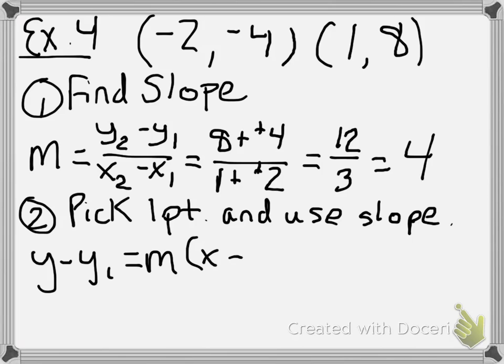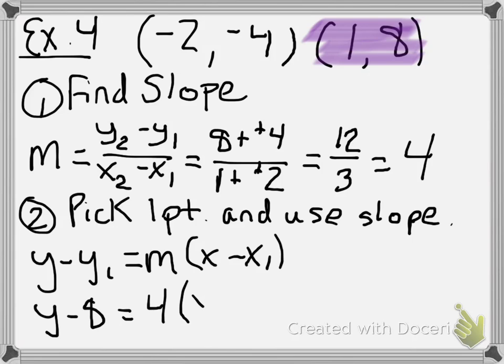There it is again: y minus y₁ equals m quantity x minus x₁. Now like I said, I'm always a very positive guy. I'm very optimistic. I have a point there that says two positive numbers. I'm going to use (1, 8). If you chose to use (-2, -4), all power to you. Your steps would look a little different than mine, but what we're going to do is we're going to put this in slope-intercept form at the end, and both lines should be the same slope-intercept form at the end, regardless of which point you use. So using (1, 8), we plug in, and we get y minus 8 equals 4 quantity x minus 1.